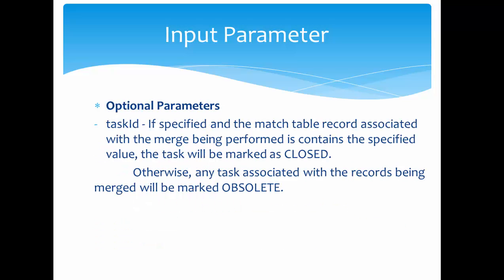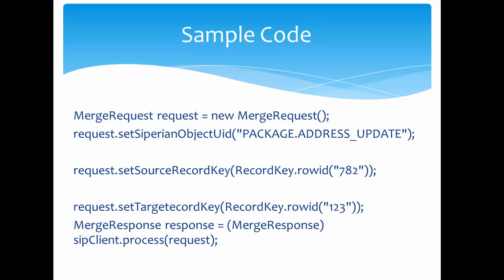The optional parameter is the task ID. If this optional parameter is specified and the match table record associated with the merge contains the specified value, the task will be marked as closed. If you are using task management and include the task ID in the request, it will be marked as deleted. In all other cases, any task associated with the records being merged will be marked as obsolete — meaning if you are merging a record that has an associated task but not performing a match job, that task will be marked obsolete.